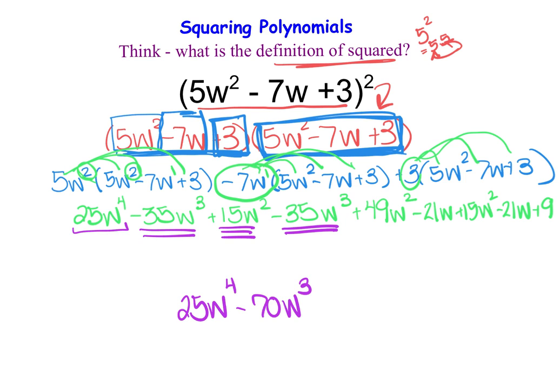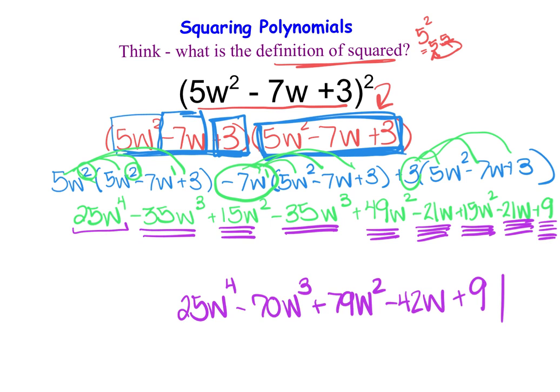Then I'm going to look next at things that have w cubed. So I have negative 35 and negative 35. Those can combine together to be a negative 70w to the third. Note that I'm just combining like terms, so the variables don't change exponents here. Then I have 15w squared, 49w squared, and 15w squared. Those all add together to be plus 79w squared. I then have negative 21w and negative 21w for a negative 42w. And then finally, the lonesome 9 at the very end.